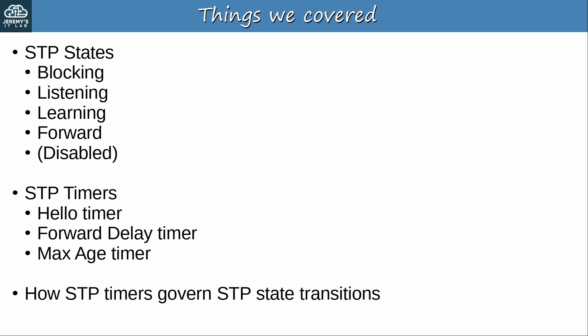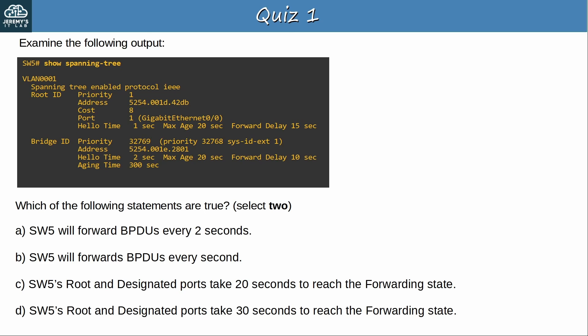Here's quiz question 1. Examine the following output. Which of the following statements are true? Select 2. Pause the video now to think about the answers. Okay, the answers are B and D. That is because it is the timers of the root bridge, not the timers configured on SW5 itself, that determine how SW5 operates. The root bridge has a hello timer of 1, so SW5 will forward BPDUs out of its designated ports every second, each time it receives BPDUs from the root bridge. And the root bridge's forward delay timer is 15 seconds, so SW5's root and designated ports will take a total of 30 seconds to reach the forwarding state.